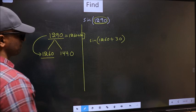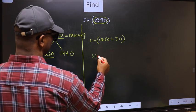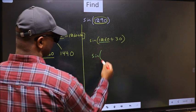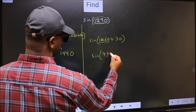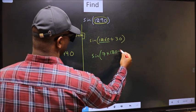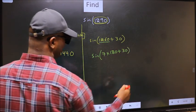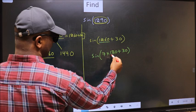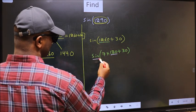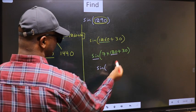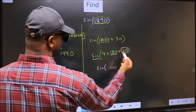Next. Sine. Now 1260 you should replace by 7 into 180 plus 30. Next. Here we have 180. So sin is not going to change. It will remain sin. And inside we get this angle 30.